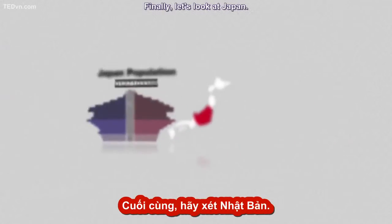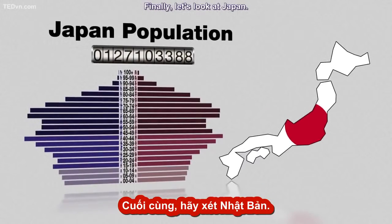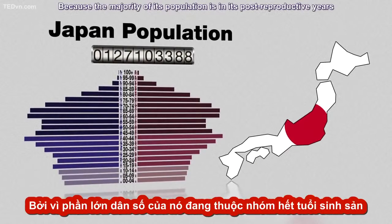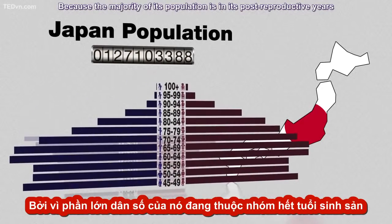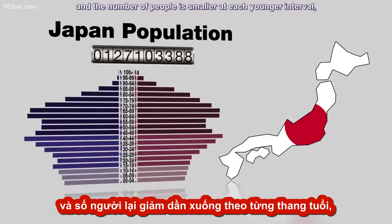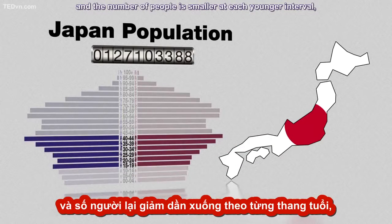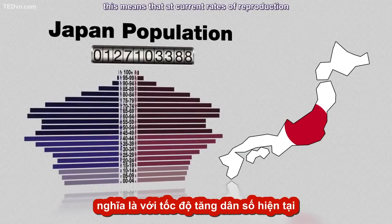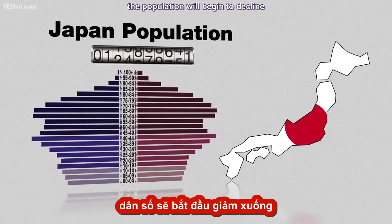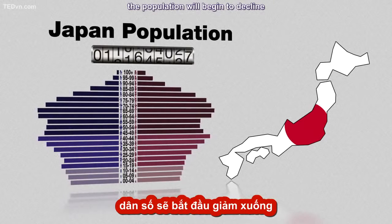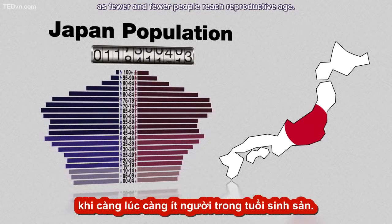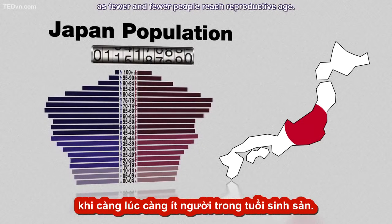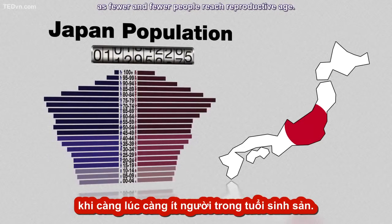Finally, let's look at Japan. Because the majority of its population is in its post-reproductive years, and the number of people is smaller at each younger interval, this means that at current rates of reproduction, the population will begin to decline as fewer and fewer people reach reproductive age.